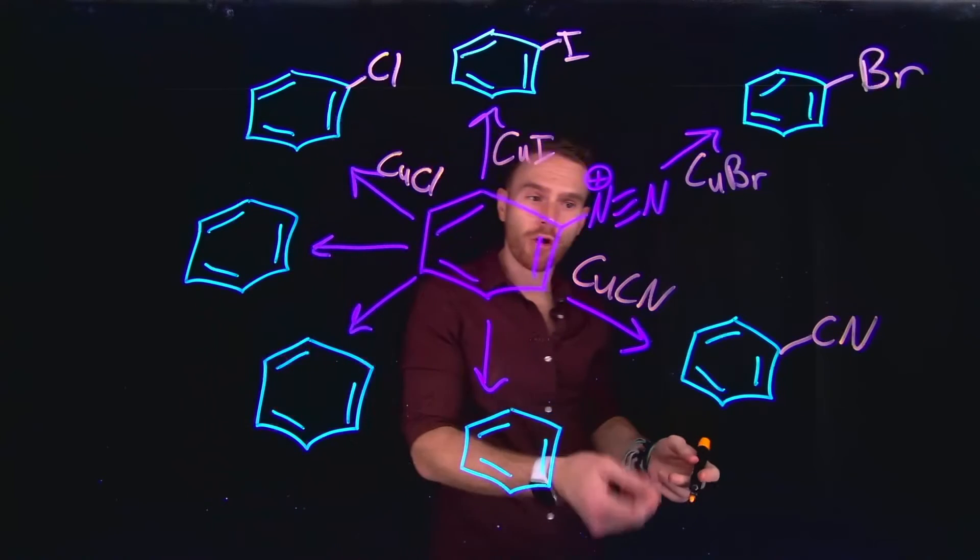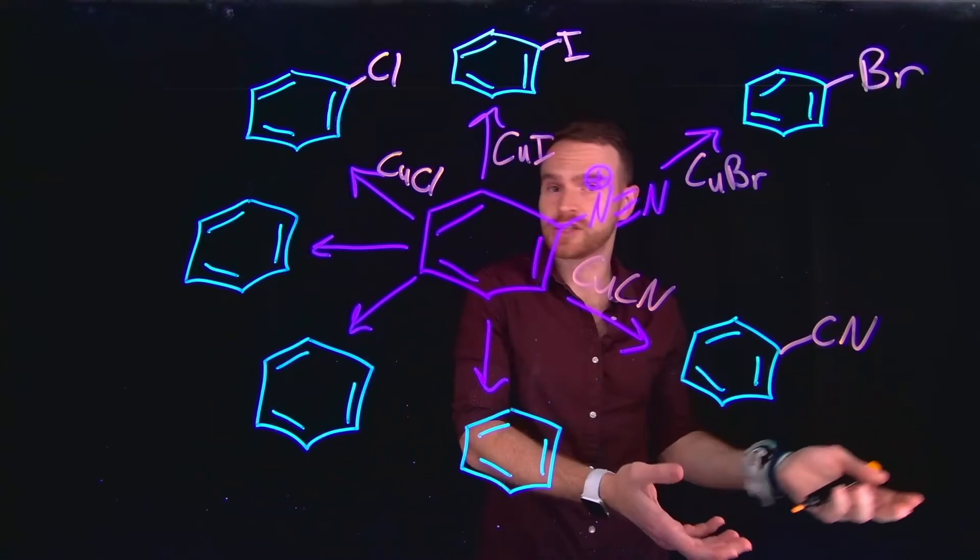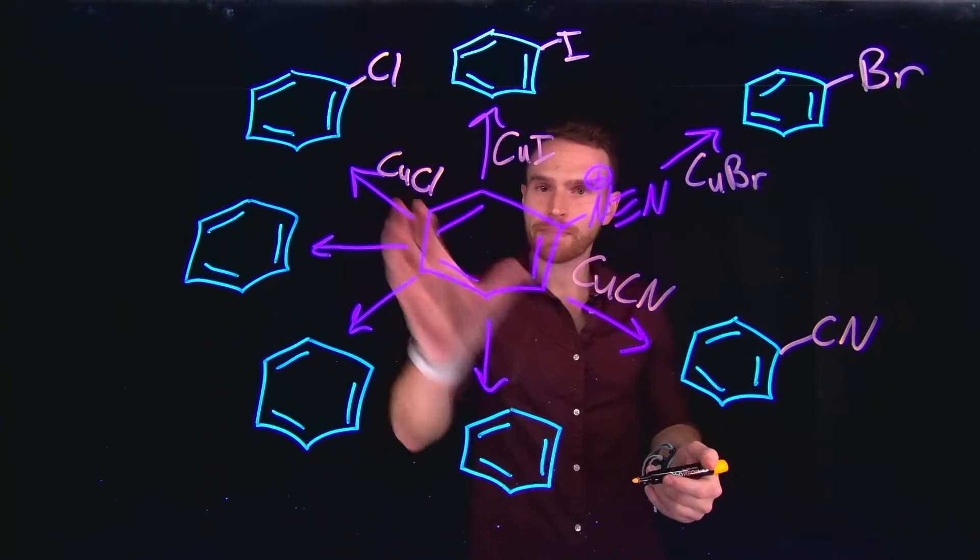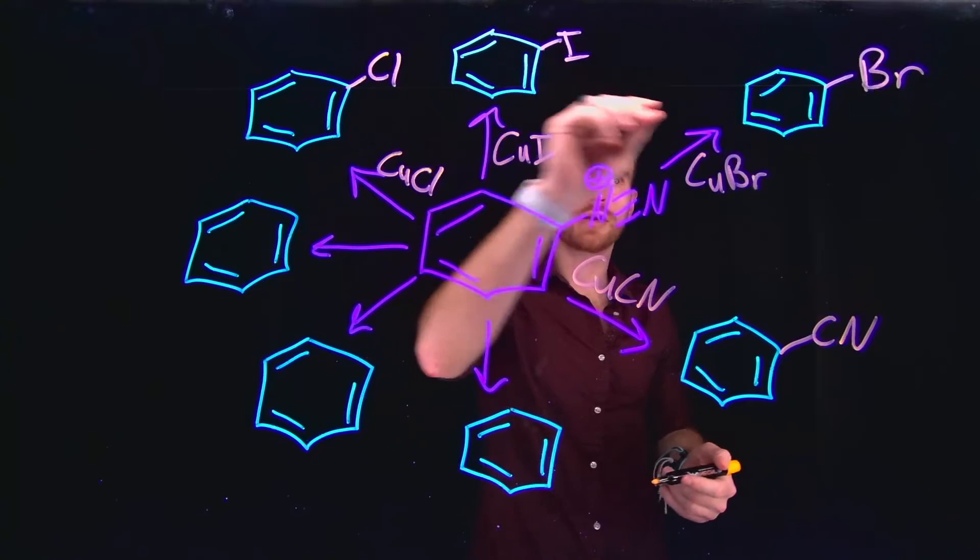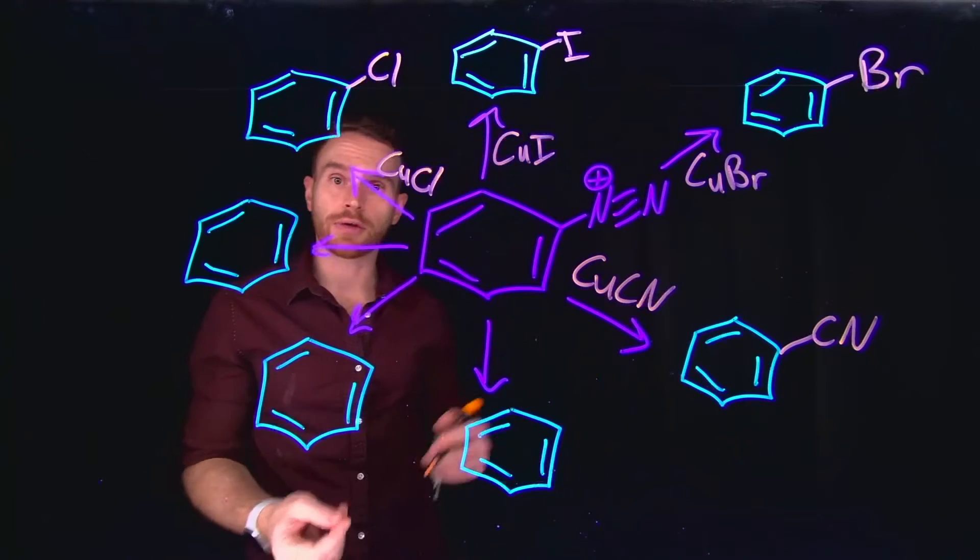And importantly, remember that we have already learned about reactions where you can transform cyano groups into, for example, carboxylic acids through oxidation. So this is a powerful way to install brand new functional groups along an aromatic compound. There are other examples as well that are incredibly powerful.